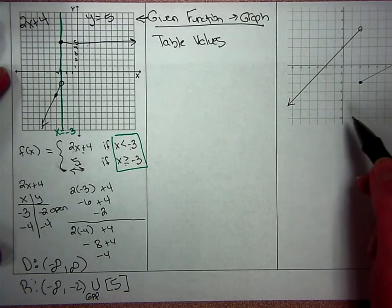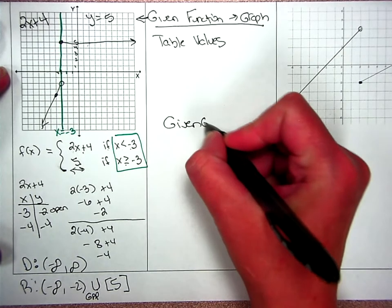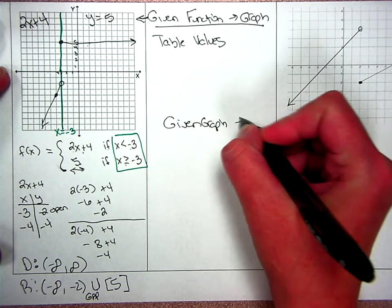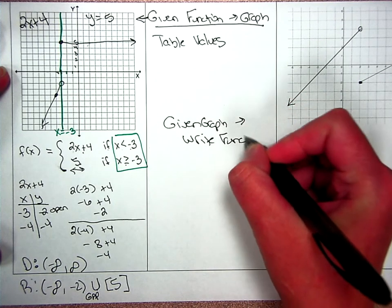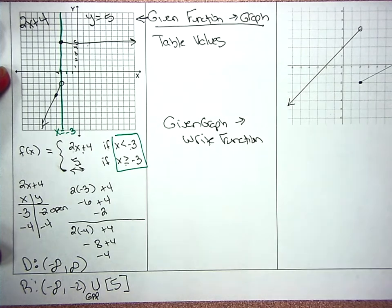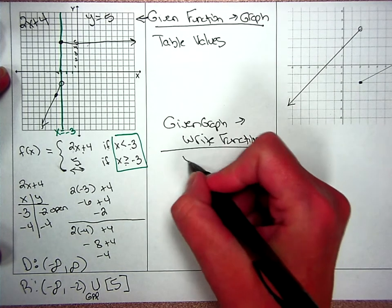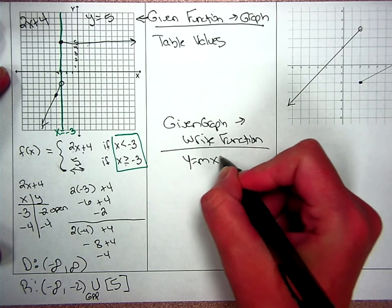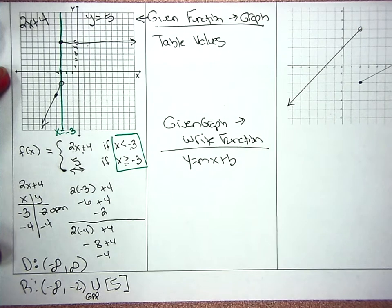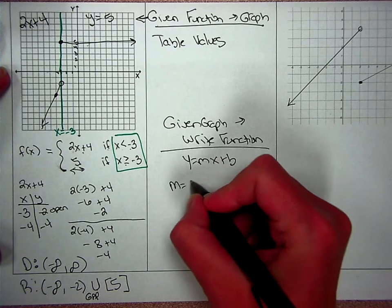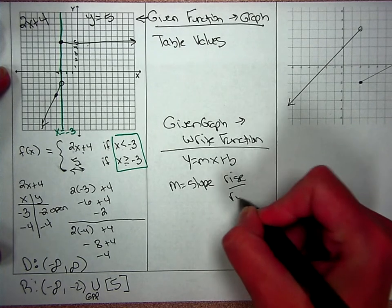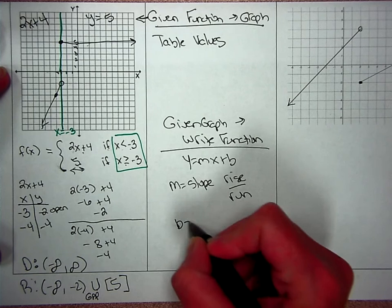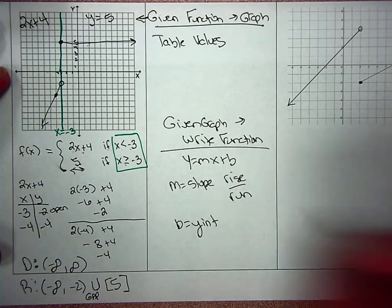The second scenario is you're given a graph and you have to write a function. And in this case, think y equals mx plus b. m is your slope. You're going to do your rise over your run. And then b is your y intercept.